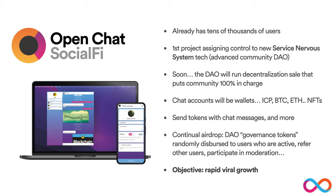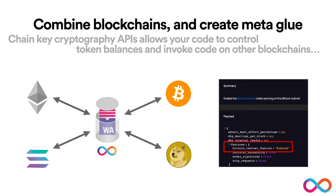Something else just coming online now is that the chain key cryptography powering the Internet Computer is being surfaced through APIs that will allow you to control token balances and invoke code on other blockchains directly — without any bridges. This is completely game changing. It's going to allow you to combine different blockchains and create a kind of meta-glue — for example, create a DEX on the Internet Computer that allows you to trade ICP for Bitcoin, where the Bitcoin is sent to an address that belongs to the DEX on the Bitcoin blockchain, with no wrapping or bridges involved whatsoever. The first iteration applying to Bitcoin is available right now, with Ethereum integration coming.